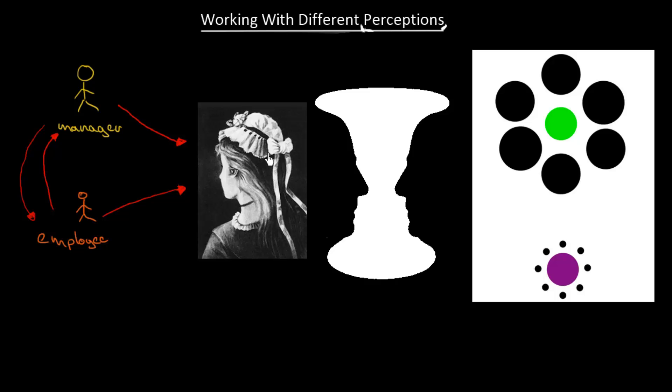So we have this first picture over here. One of us can see this as a young lady which is facing that direction over there. Here is her nose, here is her ear, then we have some sort of a necklace over here and these are her hair.